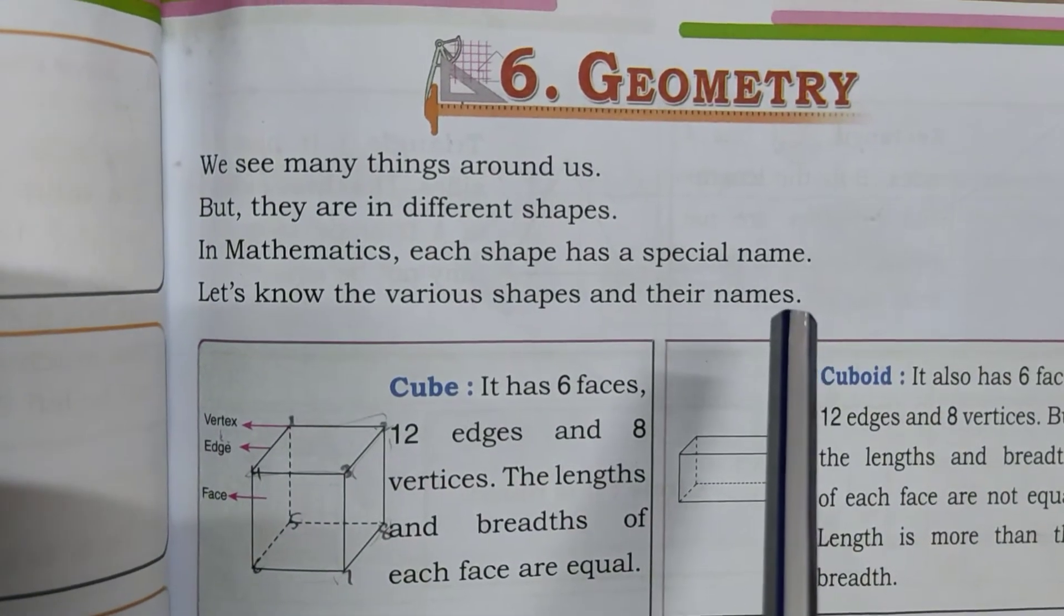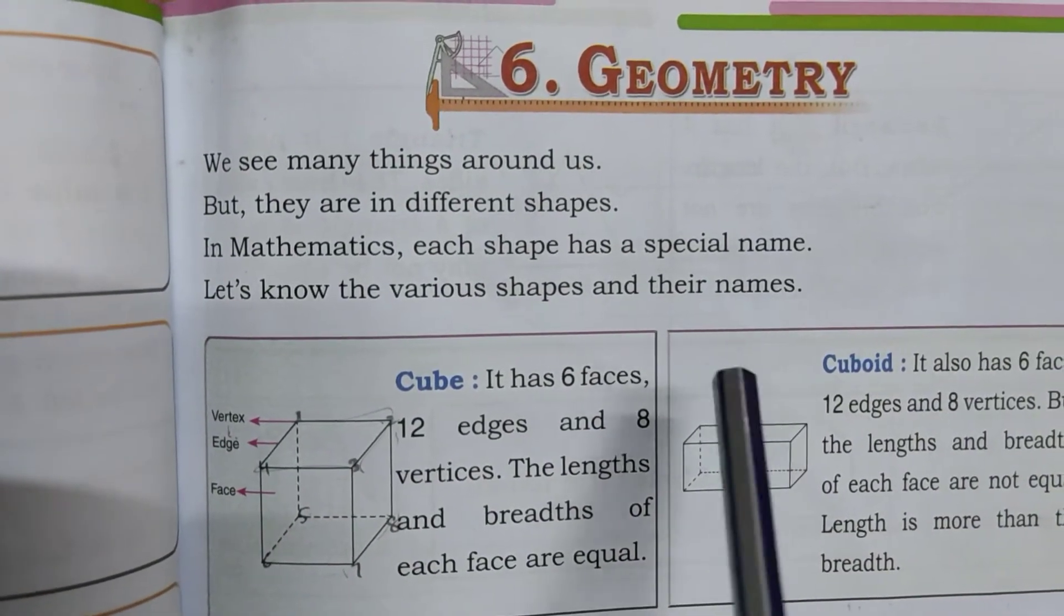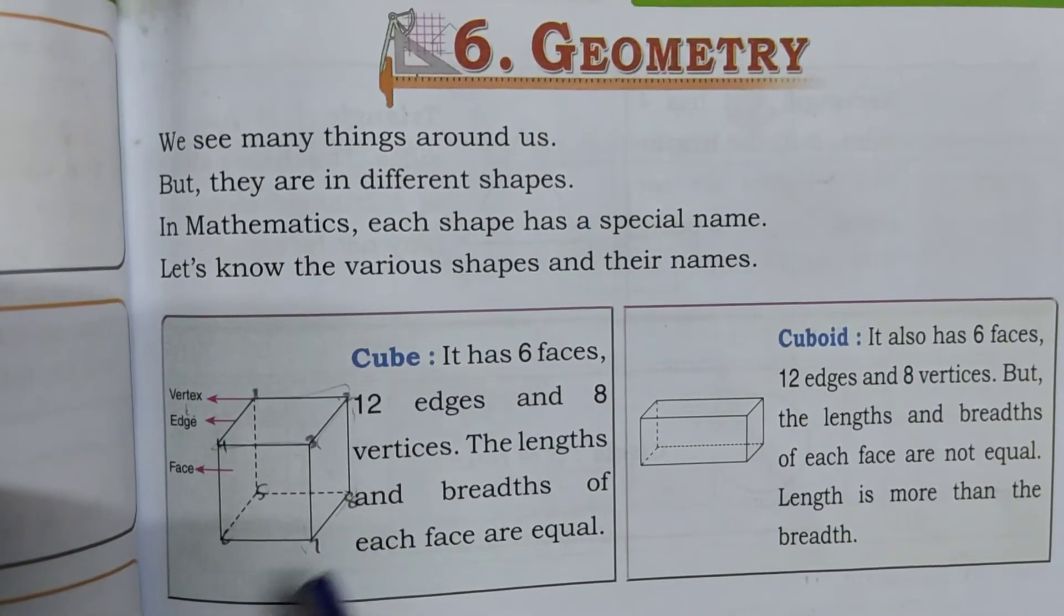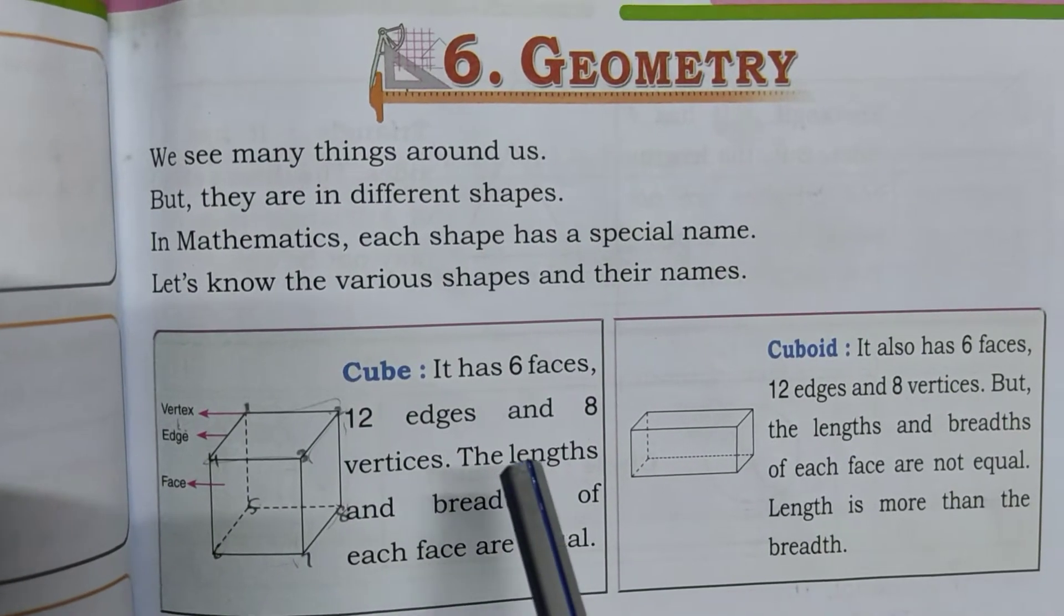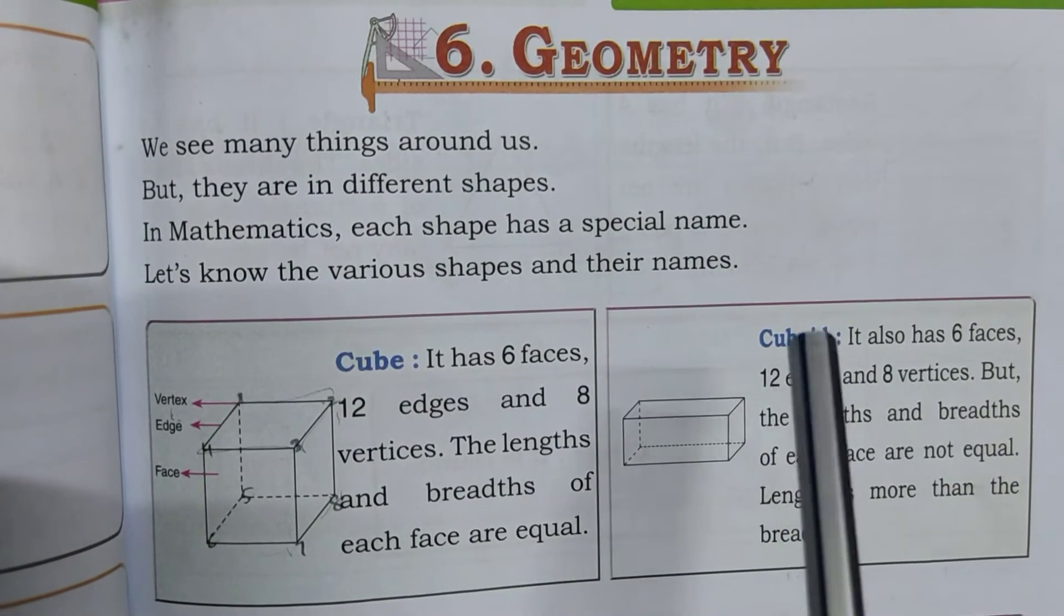We see many things around us, but they are in different shapes. In mathematics, each shape has a special name.